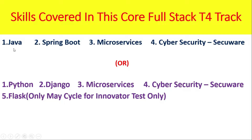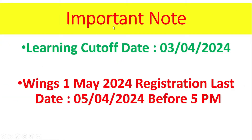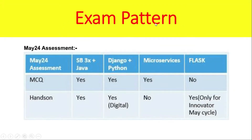There are two choices — Java or Python. If you go with Java, you need to complete Java, Spring Boot, Microservices, and Cyber Security Secure. If you choose Python, your skills are Python, Django, Microservices, and Cyber Security Secure. Flask is only for the innovator test in the May cycle. The learning cut-off date is 3-4-2024. Wings 1 May 2024 registration last date is 5-4-2024 before 5 PM. For the May 2024 assessment MCQ — Spring Boot plus Java, yes; Microservices yes for Java; Django yes for Python; hands-on yes for digital. Flask only for innovator May cycle.